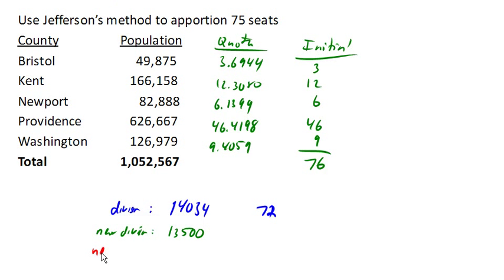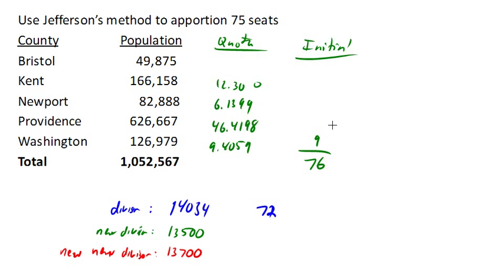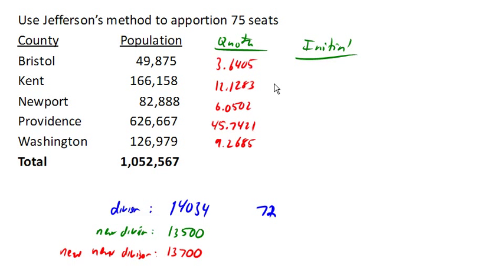So we're going to need a new divisor — we're going to need to adjust it again. It's going to need to be a little bit bigger than 13,500, since 13,500 was too small. So let's go ahead and see what happens. That gives us some new quotas, and based on these new quotas, we can calculate out our allocations. And we end up with 75 seats allocated now.